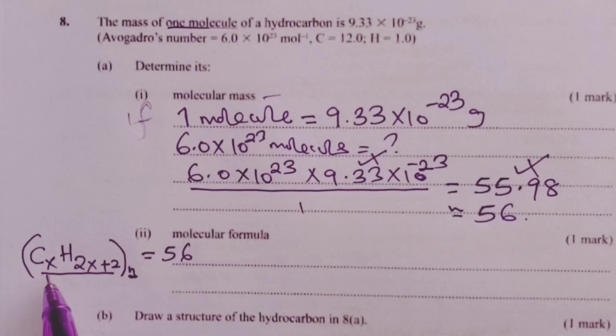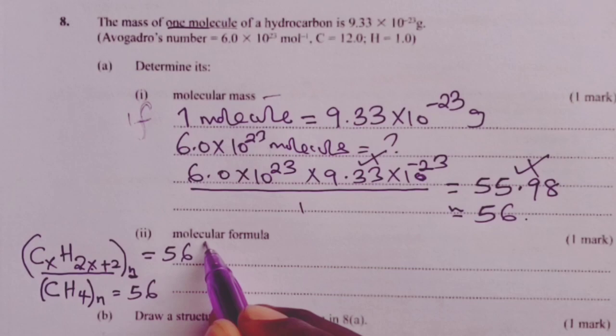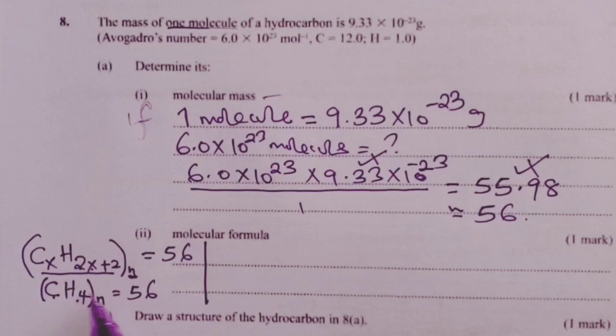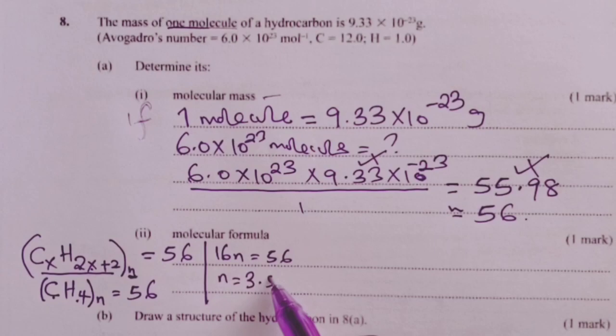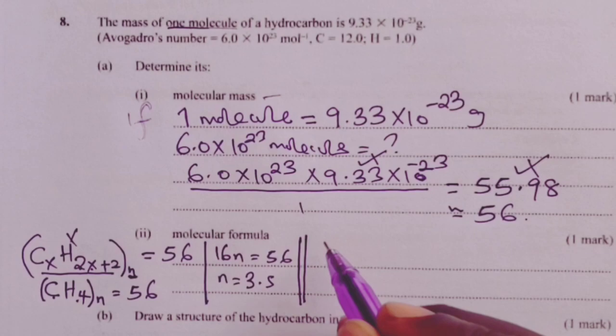If we use the general formula for alkanes, and assuming that X is 1, we would have C for 1, and H would be 4. That would be 2 times 1 plus 2, giving us 4, then to N, we equate this to 56. We would have 12 plus 4, that is 16N giving us 56. N would be 56 divided by 16, and that would be 3.5. Not a very good ratio, because it is not whole number. For that matter, we cancel out the possibility of our hydrocarbon being an alkane.